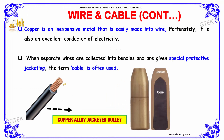Copper is an inexpensive metal that is easily made into wire. Fortunately, it is also an excellent conductor of electricity. When separate wires are collected into bundles and given special protective jacketing — this is the core and this is the jacketing — the term cable is often used.